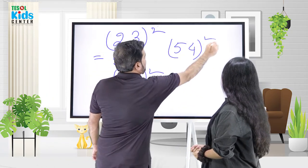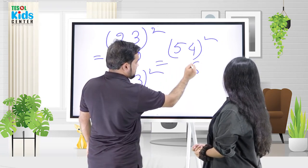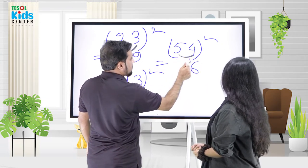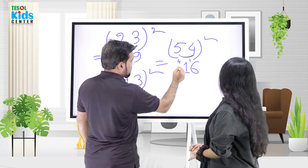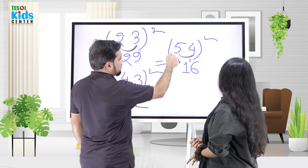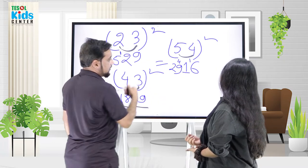Then 65 squared. 25, then 30 doubled is 60, carry 6. 36 plus 6 equals 42. Wait, let me recalculate. 25, then 30 is 60, write 0 carry 6. 36 plus 6 is 42. So 4225, right?